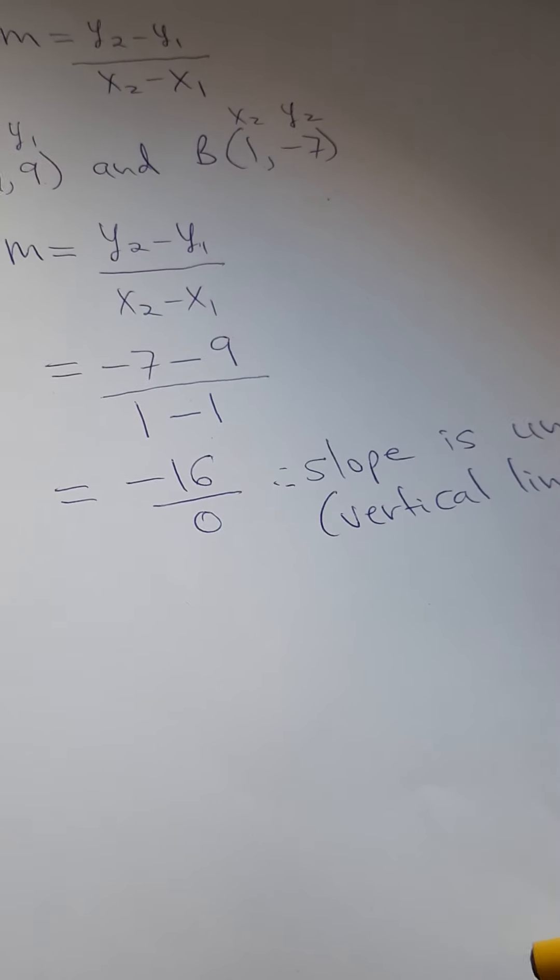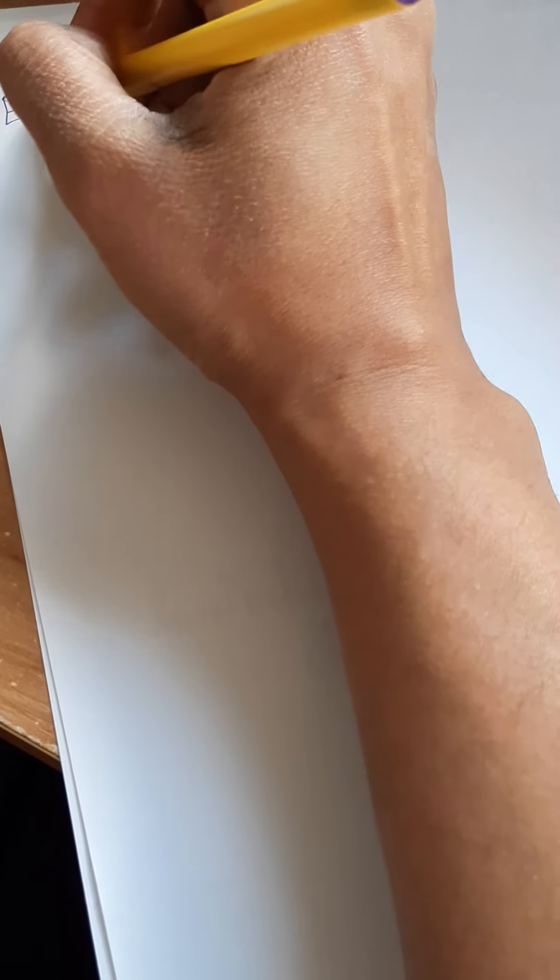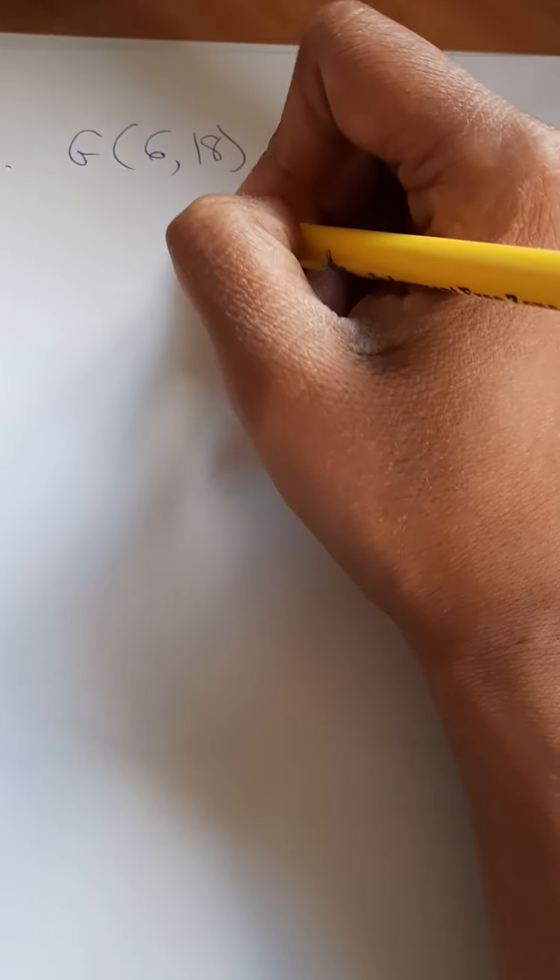Let's try a different example. I'm going to put two other points here. Let's try point G, which is (6, 18), and point H, which is (-12, 3). Whenever you denote the slope, make sure you're using a small m and not a capital one.